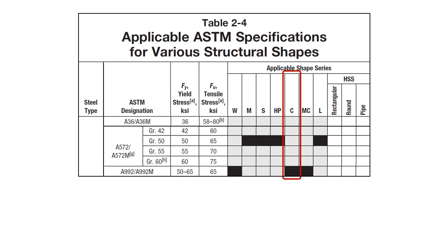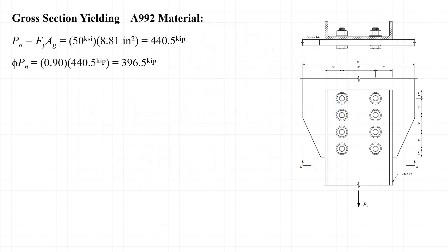Taking a second look at Table 2-4 from the AISC Manual of Steel Construction, the preferred material for a channel is actually A992, not A36. Evaluating the gross section yielding strength of the channel made of A992 material, the nominal strength P sub n would be 440.5 kips, and the design strength phi times P sub n would be equal to 396.5 kips.